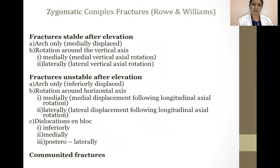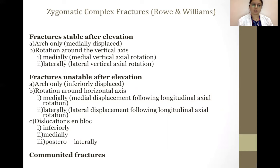Zygomatic complex fractures as given by Rho and Williams: fractures stable after elevation — A, arch only, medially displaced; B, rotation around the vertical axis, subdivided into medially and laterally. Fractures unstable after elevation — A, arch only; B, rotation around the horizontal axis, further divided into medially and laterally; C, dislocations en bloc — inferiorly, medially, and posterolaterally. Comminuted fractures is the next category.